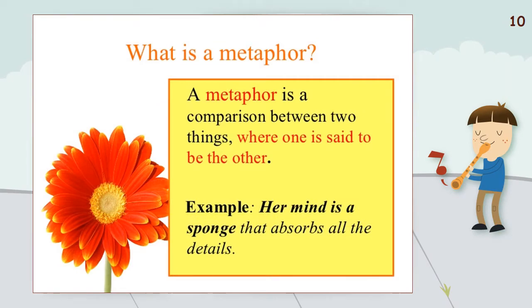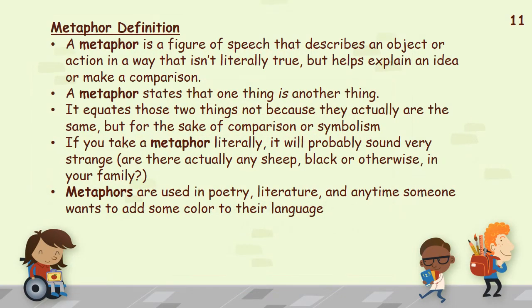What is a metaphor? A metaphor is a comparison between two things where one is said to be the other. For example: 'Her mind is a sponge that absorbs all the details.' Mind and sponge are different things, but they are related — a sponge absorbs water and a mind absorbs information — to convey something about absorbing details. A metaphor is a figure of speech that describes an object or action in a way that isn't literally true, but helps explain an idea or make a comparison.